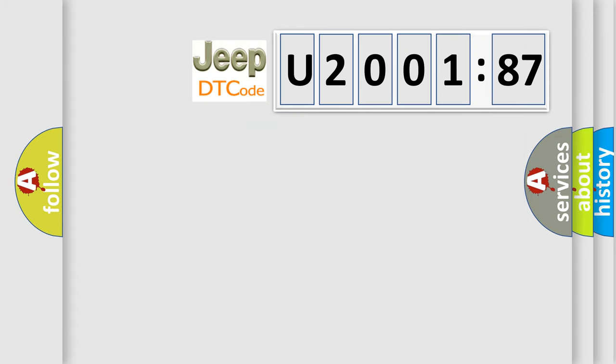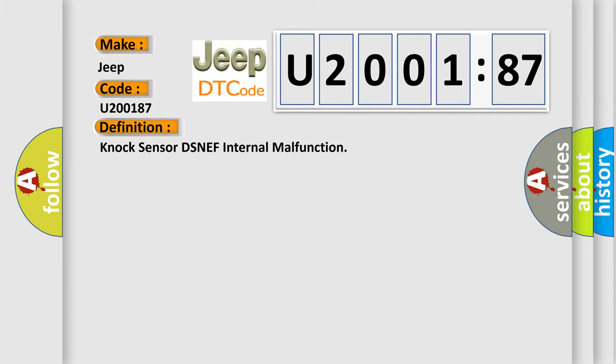So, what does the diagnostic trouble code U200187 interpret specifically for Jeep car manufacturers? The basic definition is: knock sensor DSNEF internal malfunction. And now this is a short description of this DTC code.